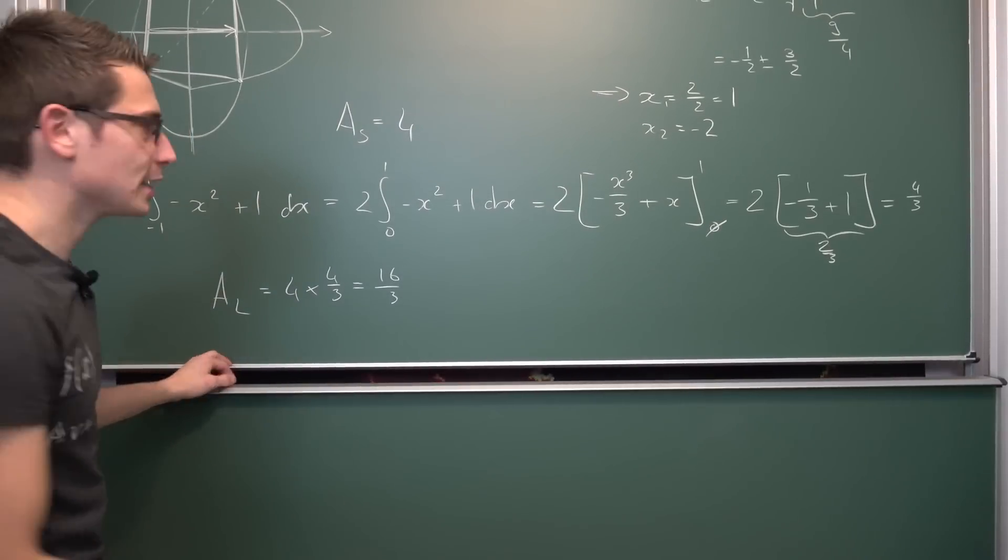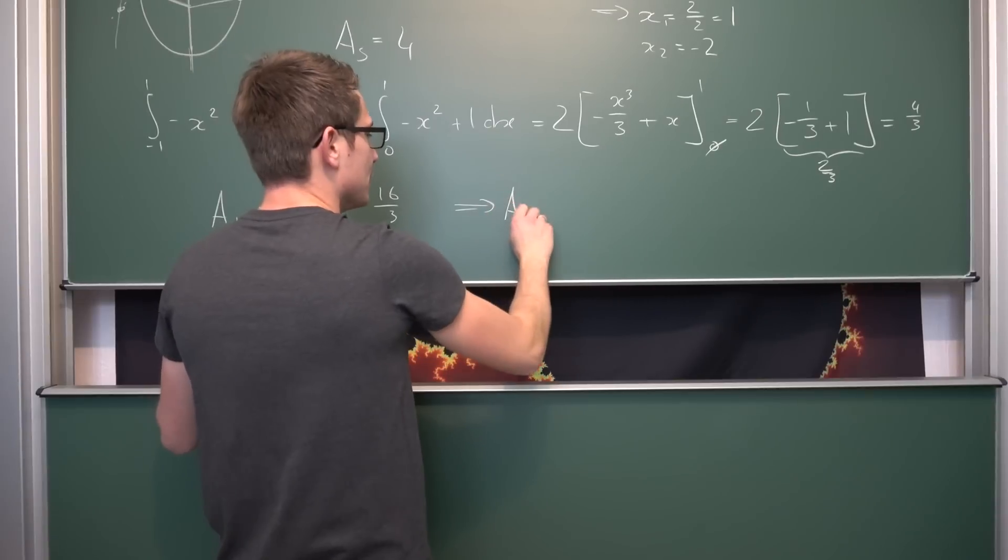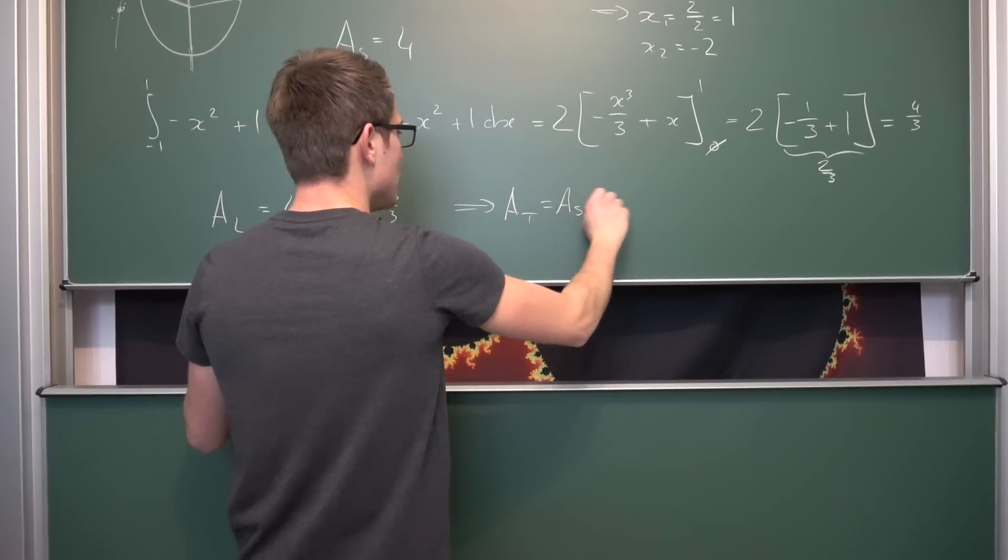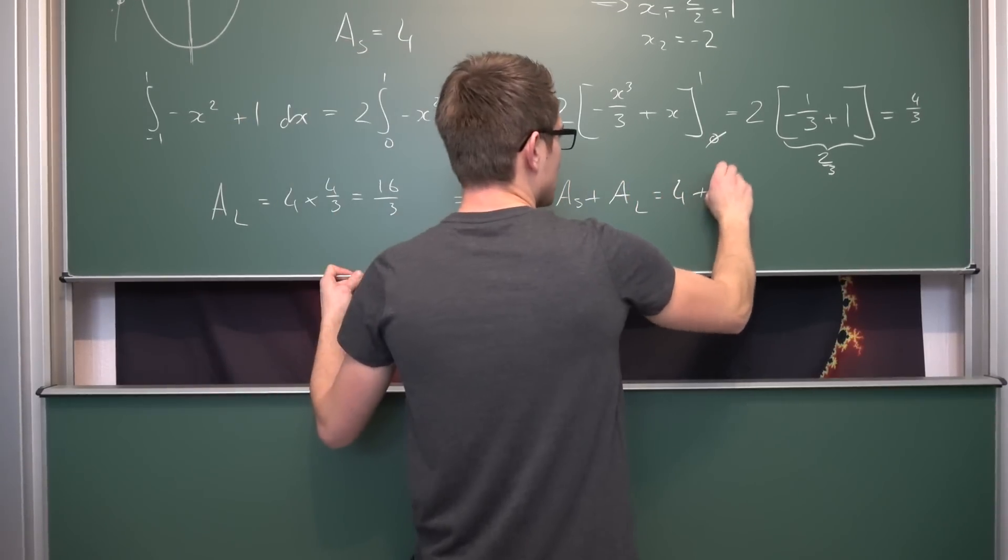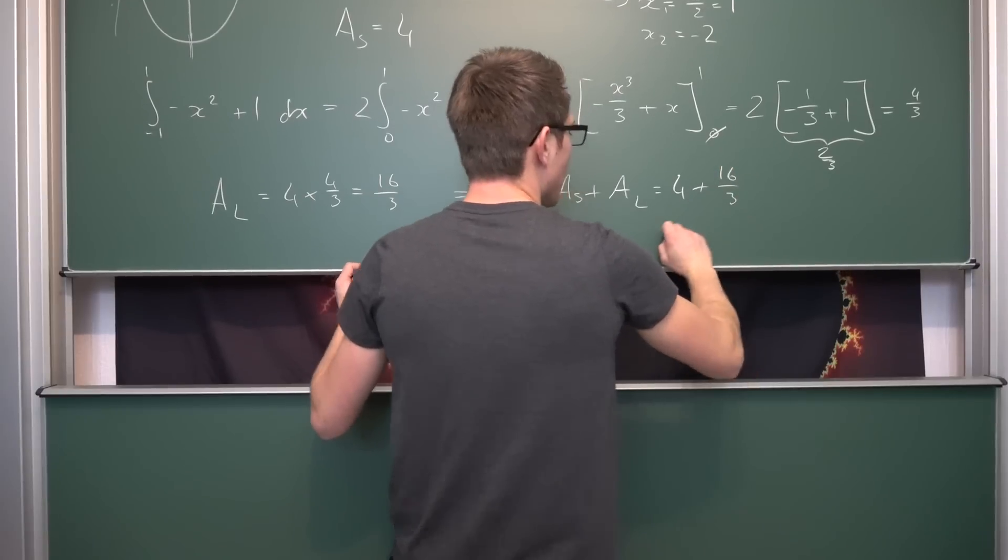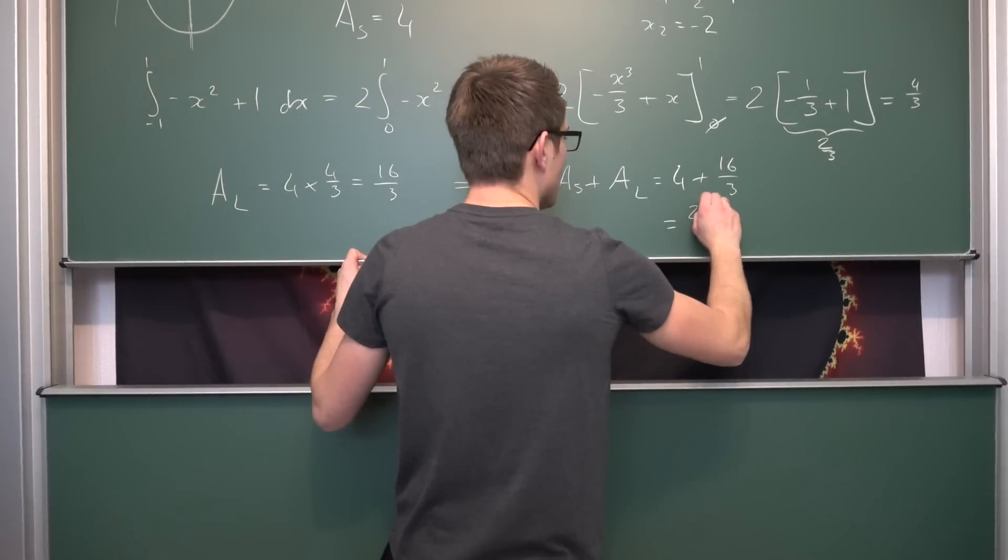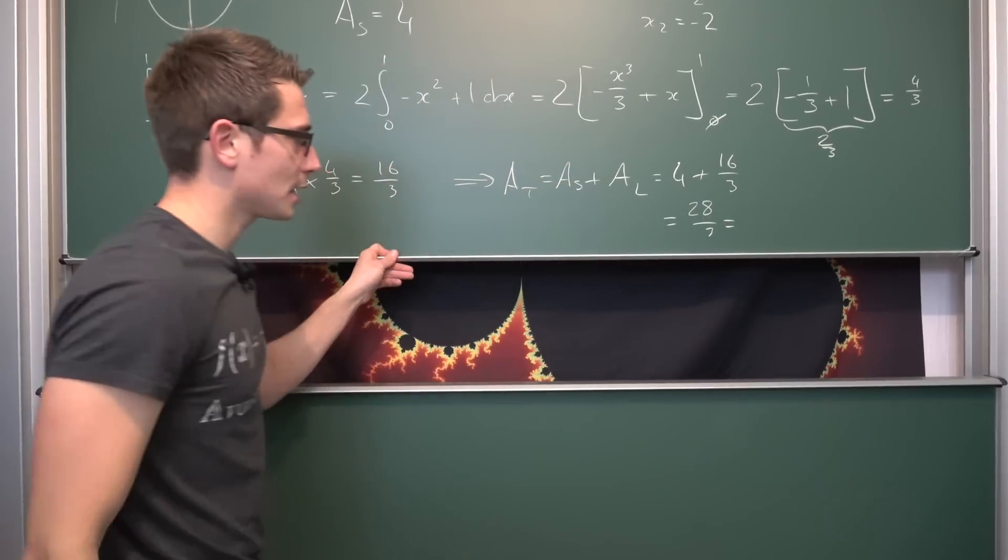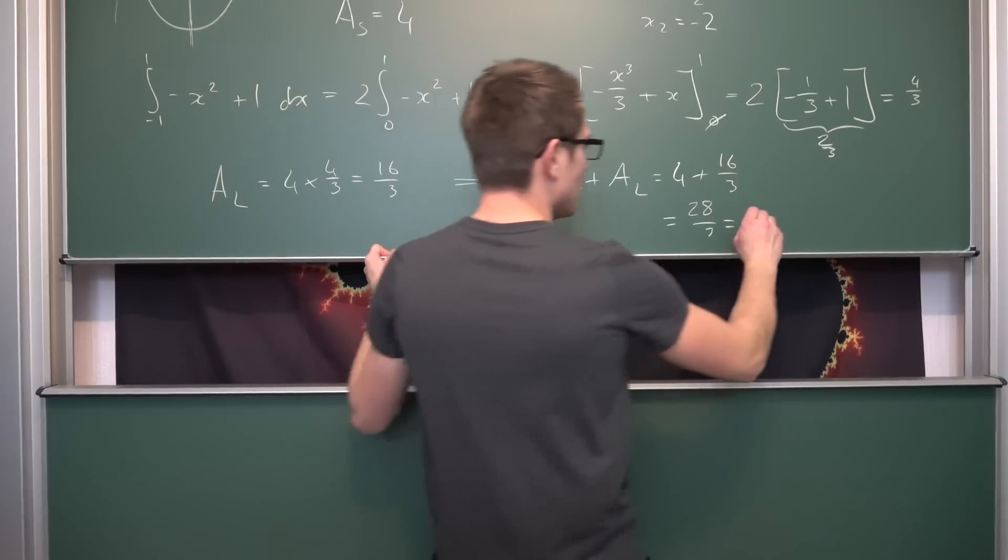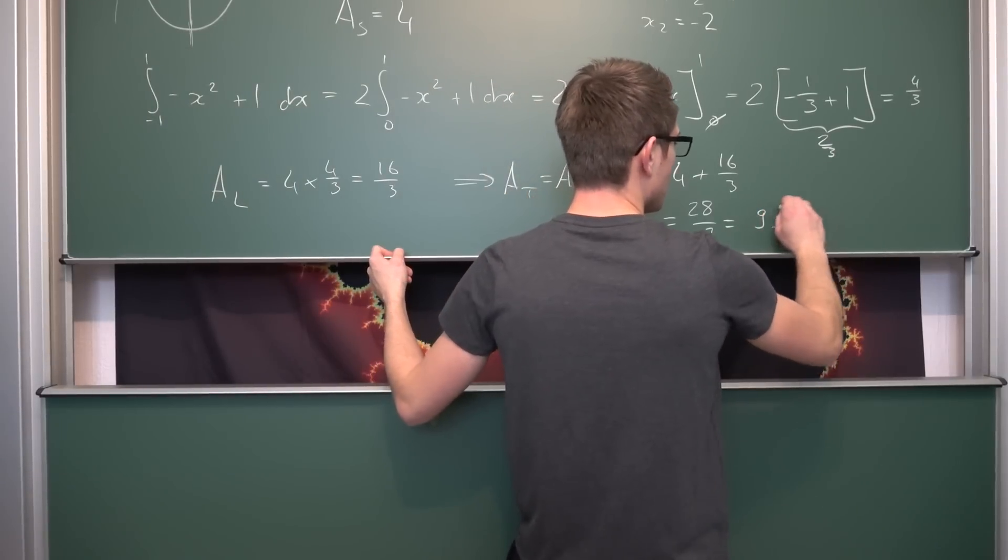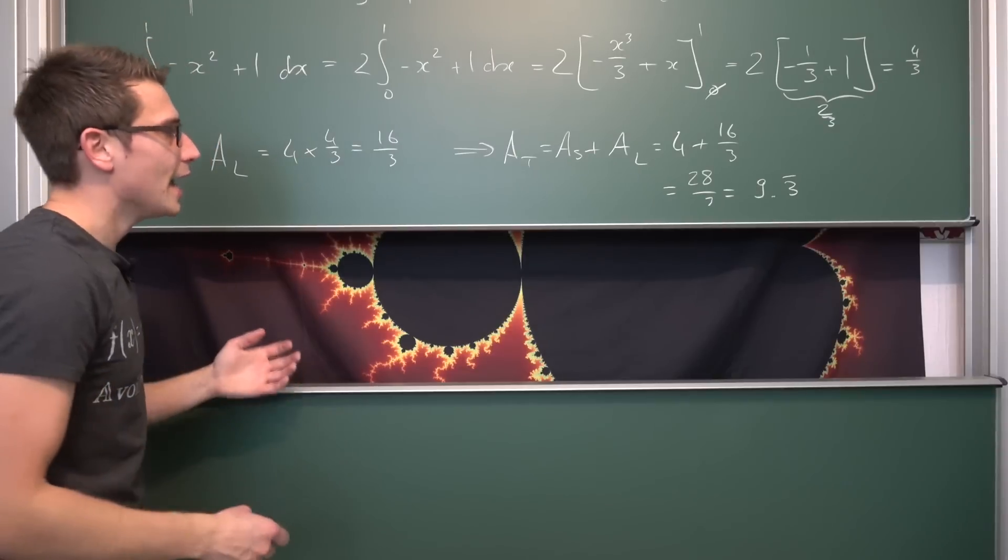Now the only thing left to do is to say well we have this leaf 4 times. The area of all the leaves together is 4 times 4/3, which is the same as 16/3. Now to get the whole area of our atom thing, our quantum calculus thing, we are just going to add the area of the square to it. So the area in total is 4 plus 16/3, which is 12/3 plus 16/3, equals 28/3. And this is 9 and 1/3 area units.